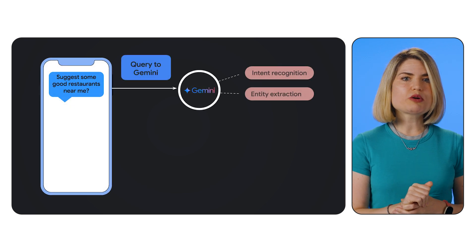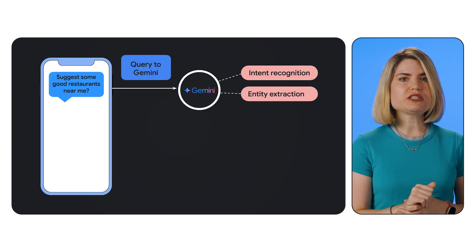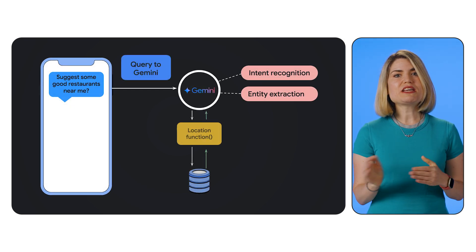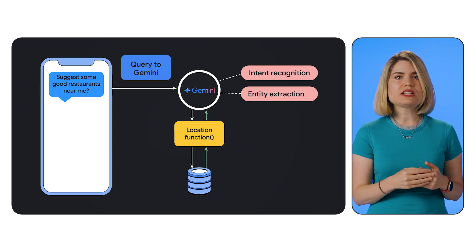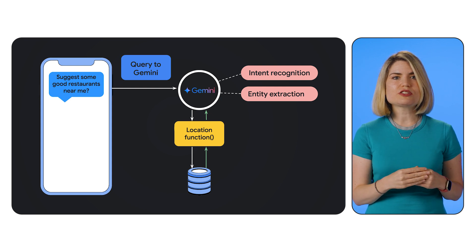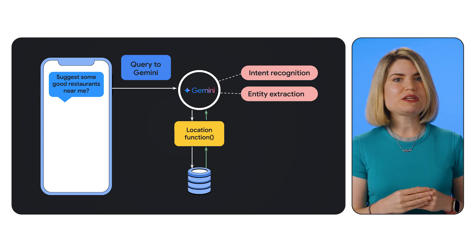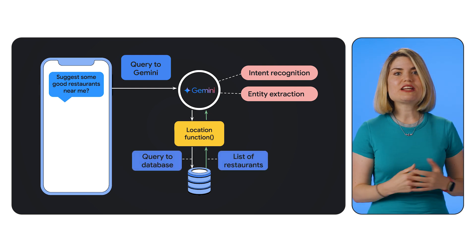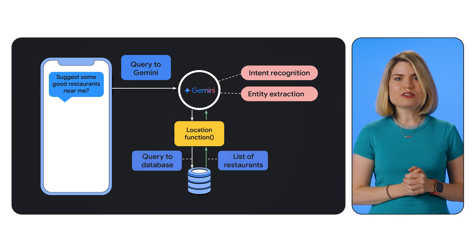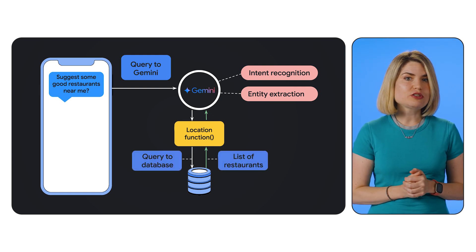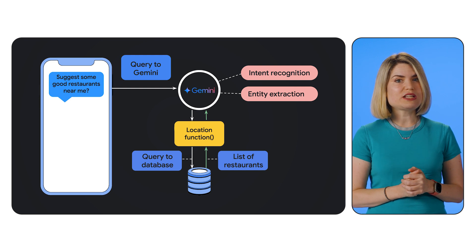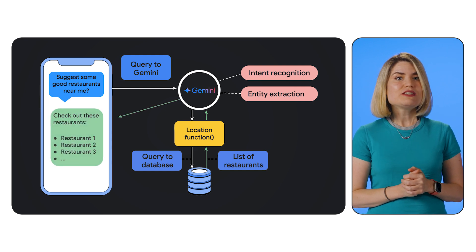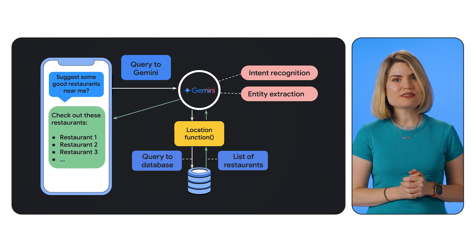Function calling gets even more powerful in multi-turn conversations. Gemini can make a function call, get the result, and then use that result in the next turn of the conversation, allowing for very dynamic and interactive experiences. Imagine asking Gemini to find restaurants near you — it could call a function to get your location, then use that location to search a restaurant database, and finally present you with a list of options.